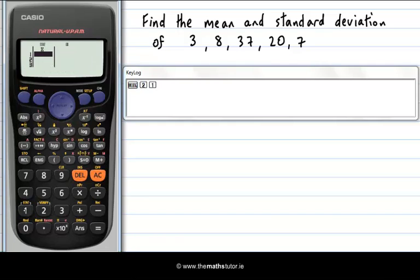And this allows me to enter my data. This is a very useful tool. So I enter my data. 3 is the first piece, followed by an equals. And then my next piece of data. 8, followed by an equals. And then 37, followed by an equals. And 20, followed by equals. And 7, followed by equals. Now I have all of my five pieces of data in. It's prompting me for a sixth, but I don't need to add any more in.